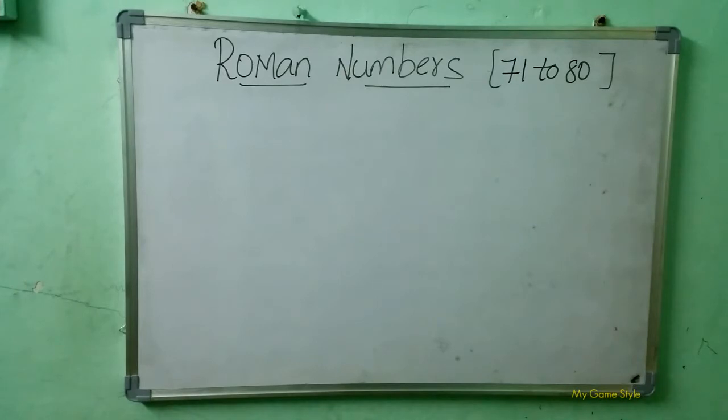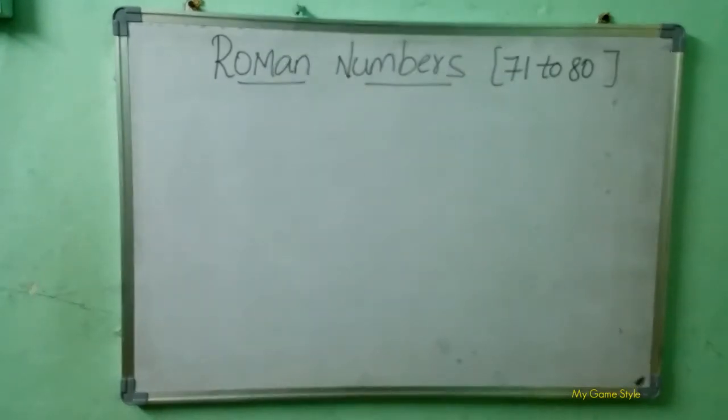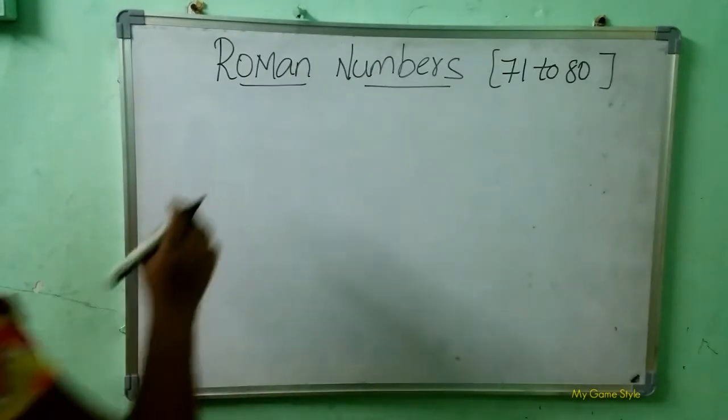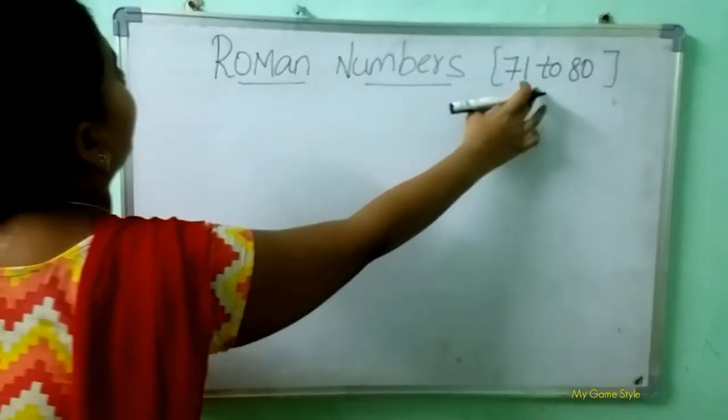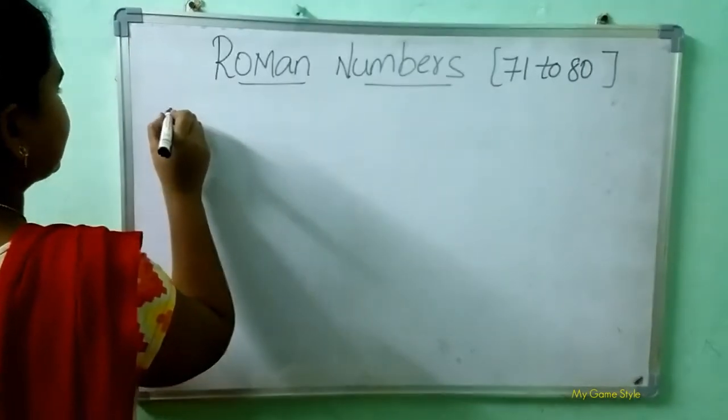Let's see how to write the Roman numbers from 71 to 80. Let's start. Roman numbers 71 to 80.